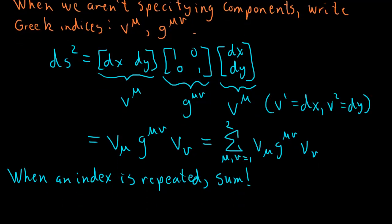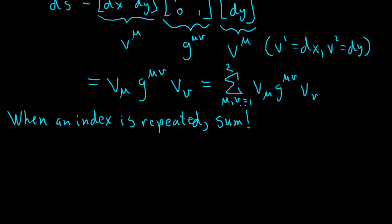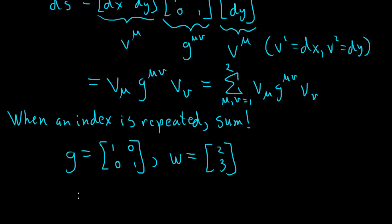If, for example, let's say again, G is this guy, the usual metric that we're used to, and say we have a vector W that looks like 2, 3. So then,